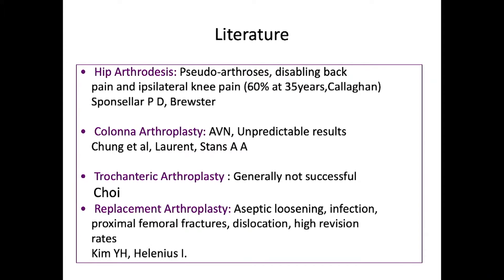Colonna arthroplasty is possibly unpredictable, but more recently Ganz has done some work and modified it — though he doesn't have long-term results as yet. As for Choi from Korea, trochanteric arthroplasties are generally not successful; I've seen them done elsewhere with very poor results. A replacement arthroplasty, as you all know, has its own problems.